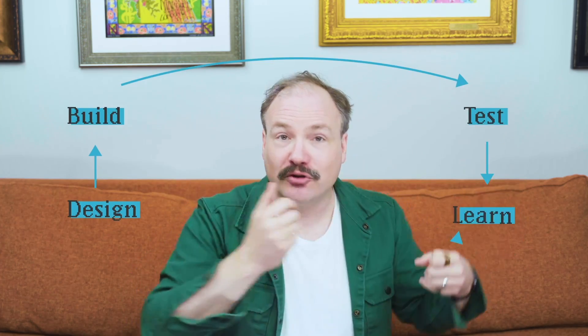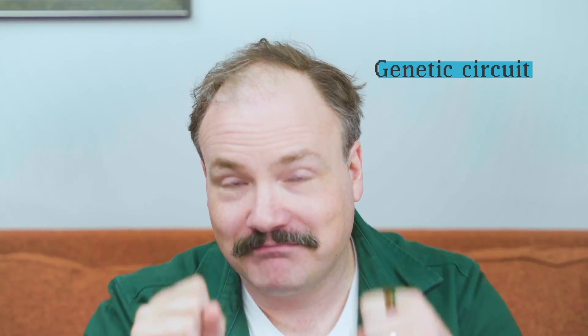If you've ever heard a biologist talk about the design-build-test-learn loop — the iterative process used for engineering R&D — that person was probably a synthetic biologist. They were engineering a yeast strain and they called it a good chassis? That's a synthetic biologist. They designed a piece of functional DNA and called it a genetic circuit? Synthetic biologist. They were debating the similarities between genetic code and computer code? Oh yeah, we do that a lot. In other words, we're huge nerds.